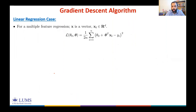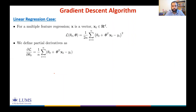We define the partial derivative with respect to θ₀ — you are now an expert and can find this easily. Can you pause the video and find the partial derivative with respect to some θⱼ?